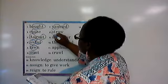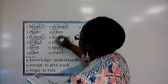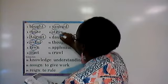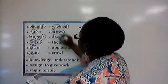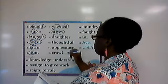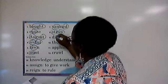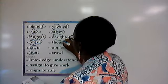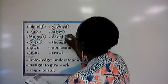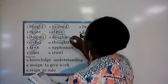In straw, we have 'str' as in stream: S-T-R, and 'aw' as in saw: A-W. In the word daughter, we have 'aught' as in caught: A-U-G-H-T, and 'er' as in verse: E-R.